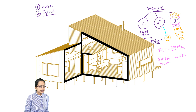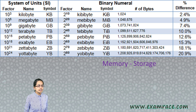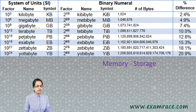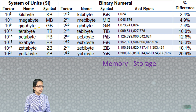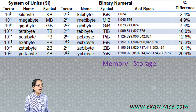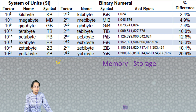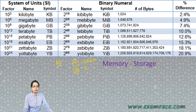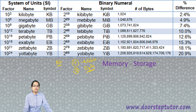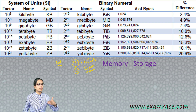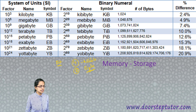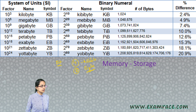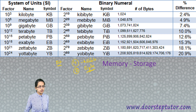The next important thing is understanding storage units. The smallest unit is known as a bit. Four bits make a nibble, and eight bits make a byte. Once you have bytes, you then have kilobyte, megabyte, and gigabyte — this is the SI system that we talk about, and with this SI system you have the various units explained.